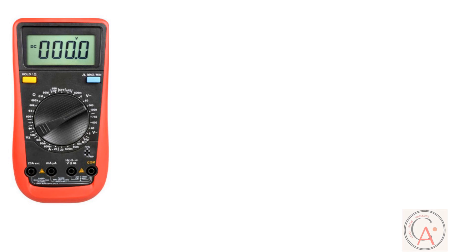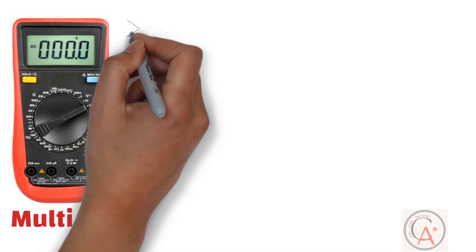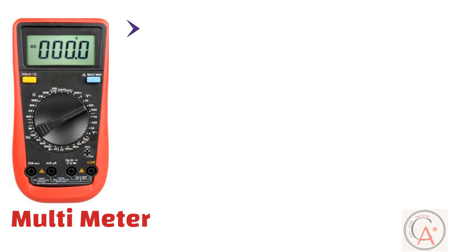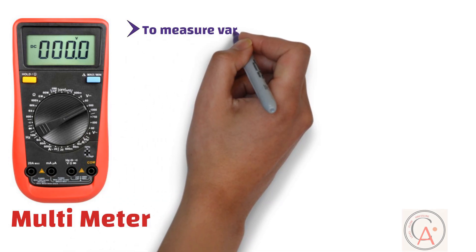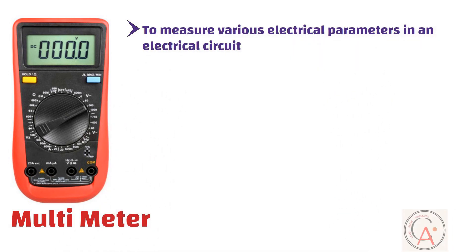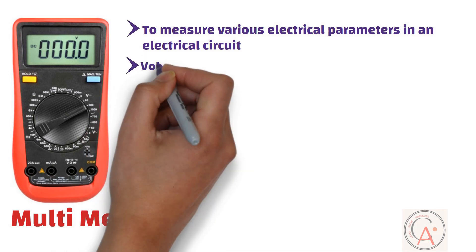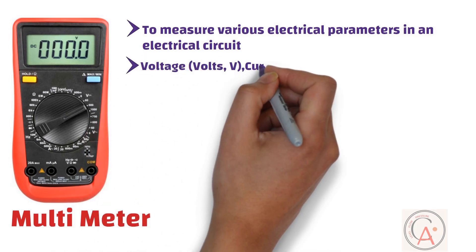The most important tool for instrumentation engineers is a multimeter. A multimeter is short for multiple meters. It is a versatile electronic instrument used to measure various electrical parameters in an electrical circuit. Multimeters typically measure several properties, including voltage, current, and resistance.